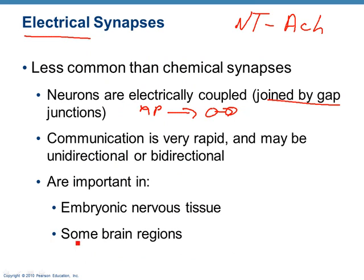You'll see electrical synapses sometimes in some brain regions, and also in embryonic tissue. Why would you expect electrical synapses in embryonic tissue instead of chemical synapses? They're not ready yet — there's not enough material to start making proteins, vesicles, or neurotransmitters. They just don't have all their stuff yet. When you have a single cell fertilized, it divides into two cells, then four, eight, sixteen, until it finally looks like something recognizable. For a while it's just a blob of cells, and there's got to be communication between these cells, so electrical synapses are a really quick and effective way until you have development and actual pathways for neurotransmitters.